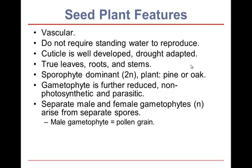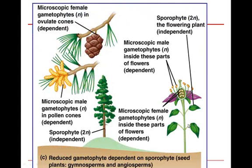We have separate male and female gametophytes. The male gametophyte is simply a pollen grain. The female gametophyte is a few cells in a seed — technically in an immature seed. In the upper left we can see a microscopic female gametophyte in the female cones, and microscopic male gametophytes in the little male cones. The sporophyte is independent. The reduced gametophyte is dependent on the sporophyte, and that's true in both the gymnosperms and the angiosperms.